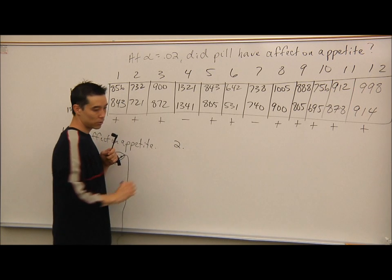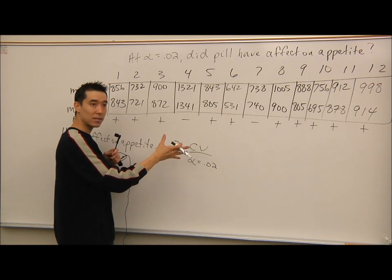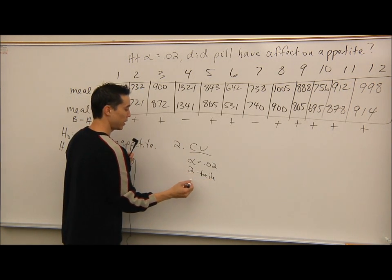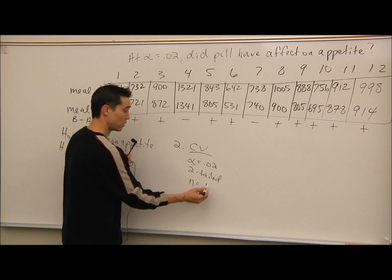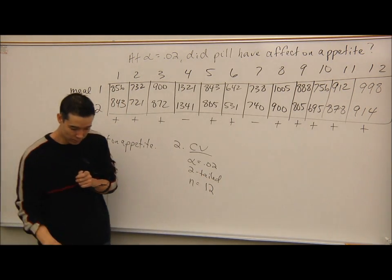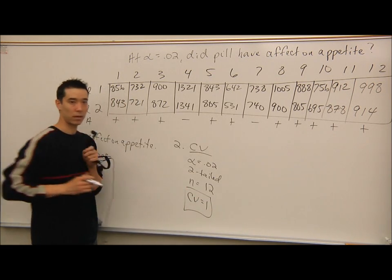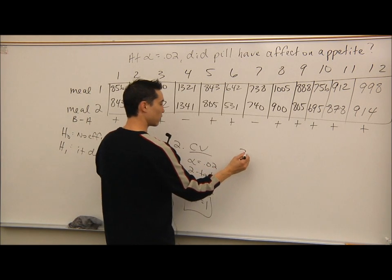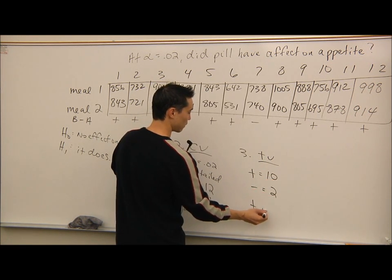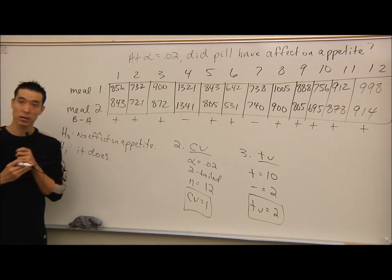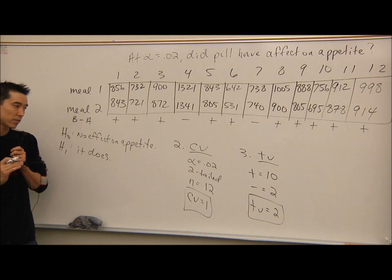Step two: go to the critical value chart. Alpha in this problem is 0.02. It's a two-tailed test because we're asking if the pill has an effect or not. N is 12 — all 12 are pluses or minuses, no zeros. Looking up 0.02 two-tailed with N equals 12, the critical value is 1.